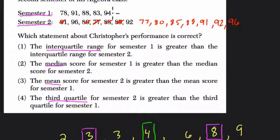Now in the other semester, we have a smallest value of 78, then 83, then 88, then 91, then 94. So we rearrange these into ascending order. That's going to help us.